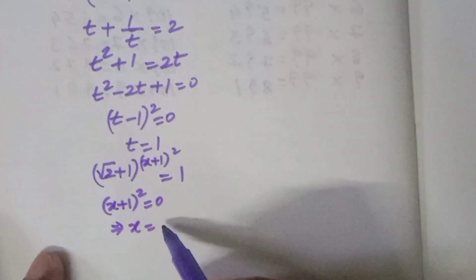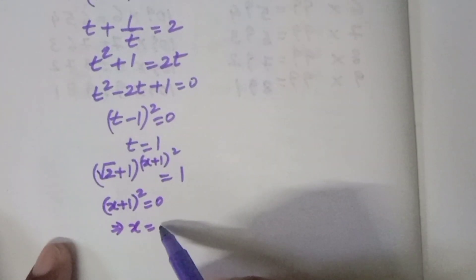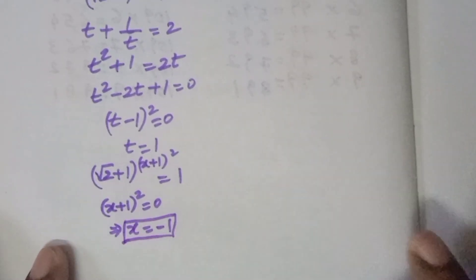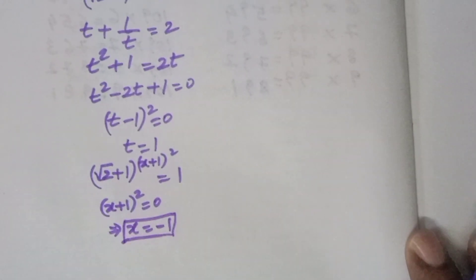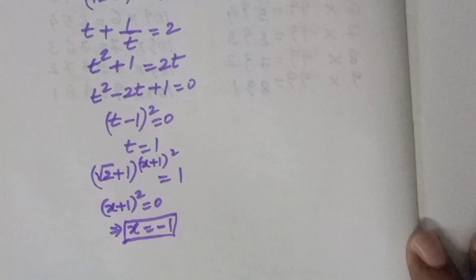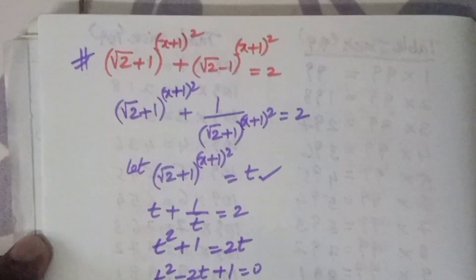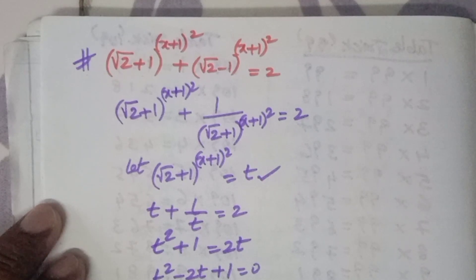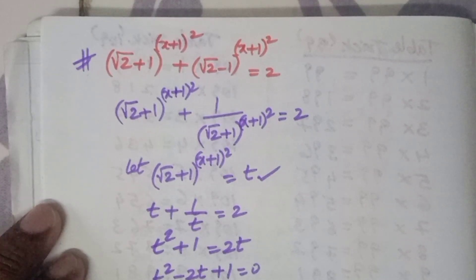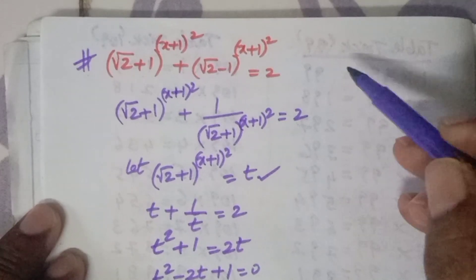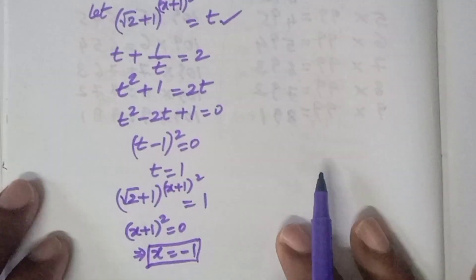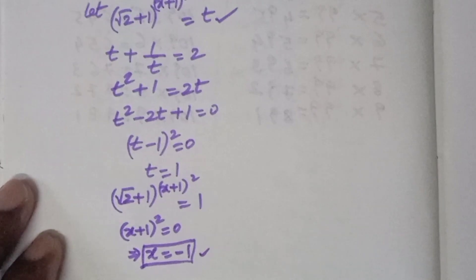When x = -1, the value of (√2+1)^((x+1)²) + (√2-1)^((x+1)²) equals 2. This is the solution to the question.